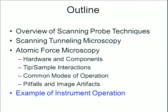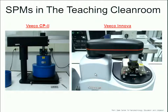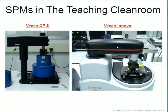As promised, we're going to show an example of using a real tool — instrument operation. Here are two examples of scanning probe microscopes: a Veeco CP2 on the left and a Veeco Innova on the right. On both, you'll see similar features. The large T-shaped structure in black is a swivel arm holding an optical microscope. The optical microscope is there solely to help us align the laser onto the cantilever, since that must be done by manual control — you manually turn the mirror to direct the laser down onto the cantilever.